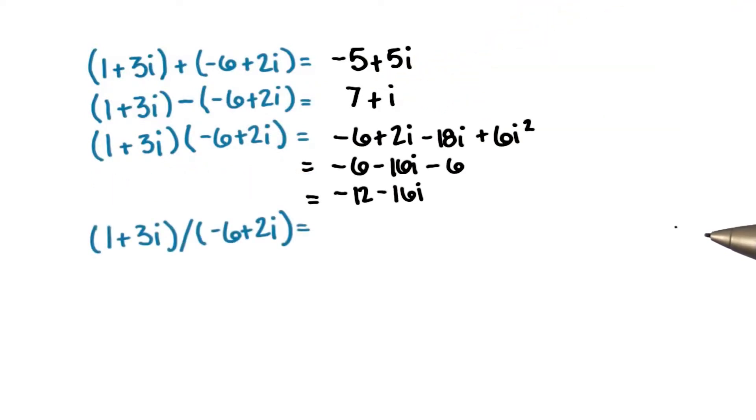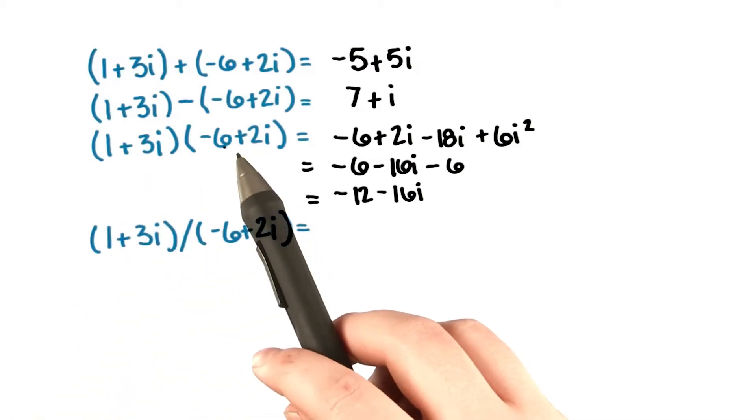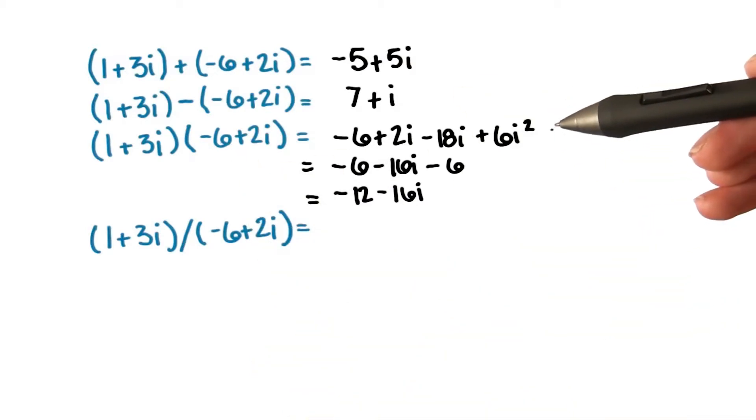When we multiply complex numbers, this needs to happen by distributing in the same way that we did with binomials involving variables. The quantity 1 plus 3i times the quantity negative 6 plus 2i gives us negative 6 plus 2i minus 18i plus 6i squared,